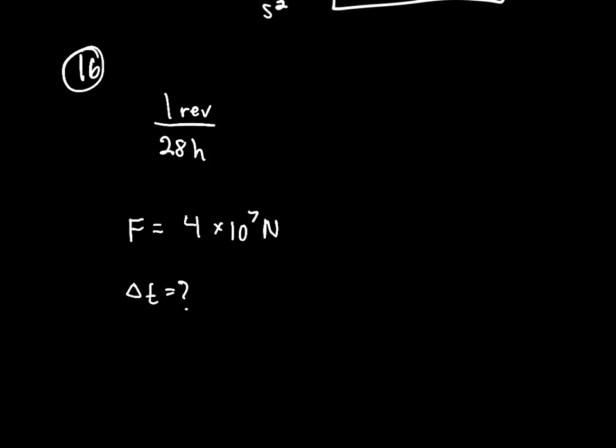We need to convert both into SI units: radians per second. For omega-final: one revolution times two pi radians per revolution, divided by 28 hours times 3,600 seconds per hour, gives 7.3 times 10 to the negative 5 radians per second.